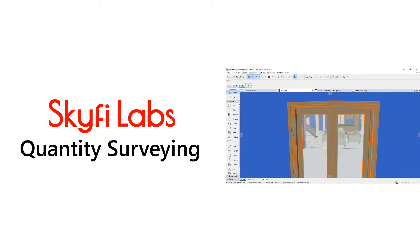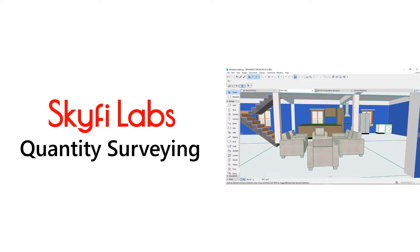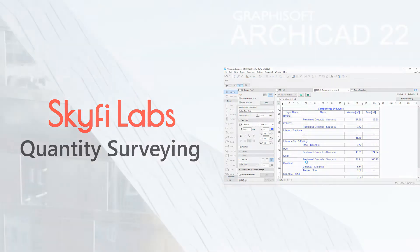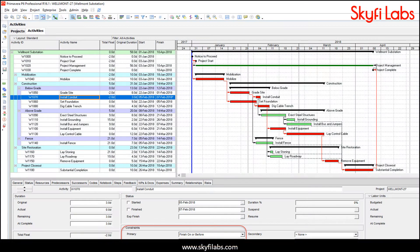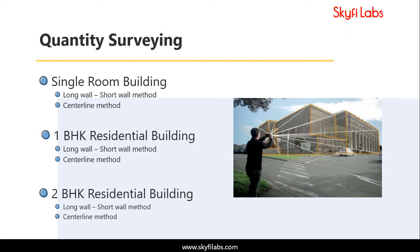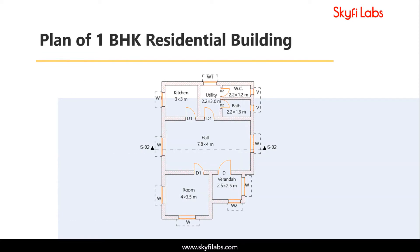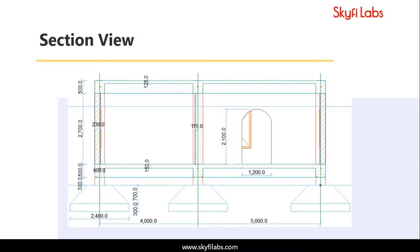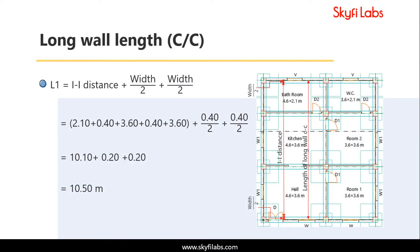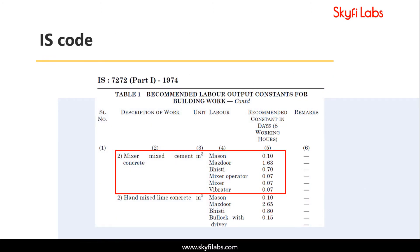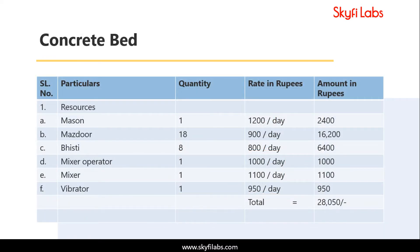In this course, you will learn the concept of quantity surveying hands-on using industry-grade software like ArchiCAD and Primavera. This is a practical course where you will learn to perform estimation on various construction projects like single room building, one BHK and two BHK residential buildings using the long wall short wall and centerline method. You will start by understanding the CAD drawings and section views, then manually estimate the quantity of various works involved according to codebooks, and finally prepare costing and budget documents.